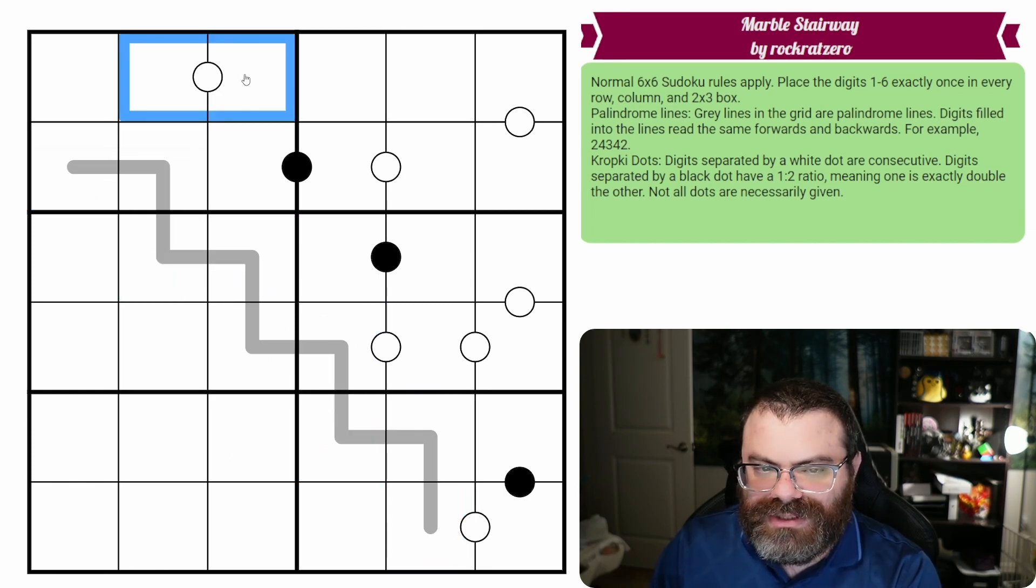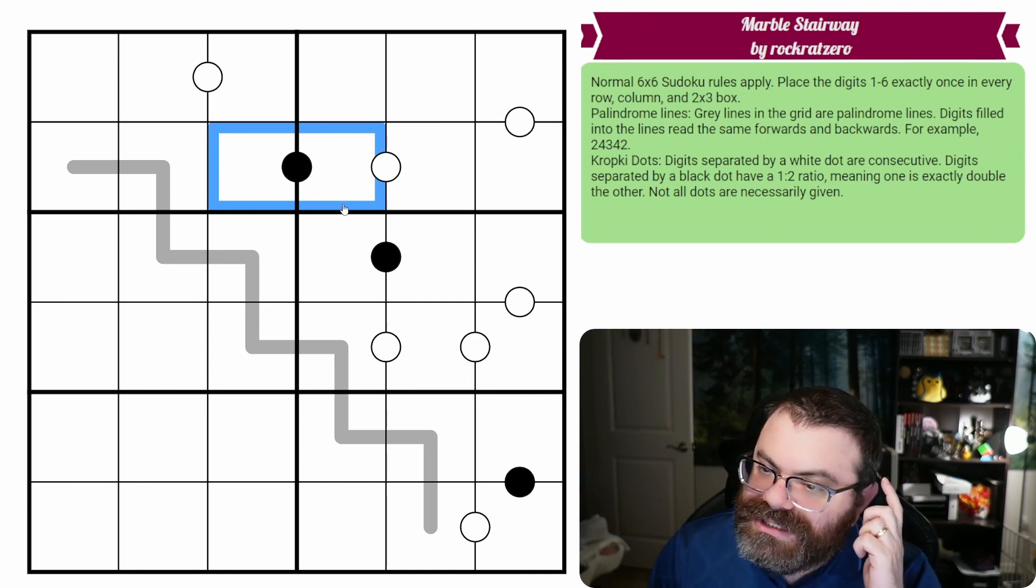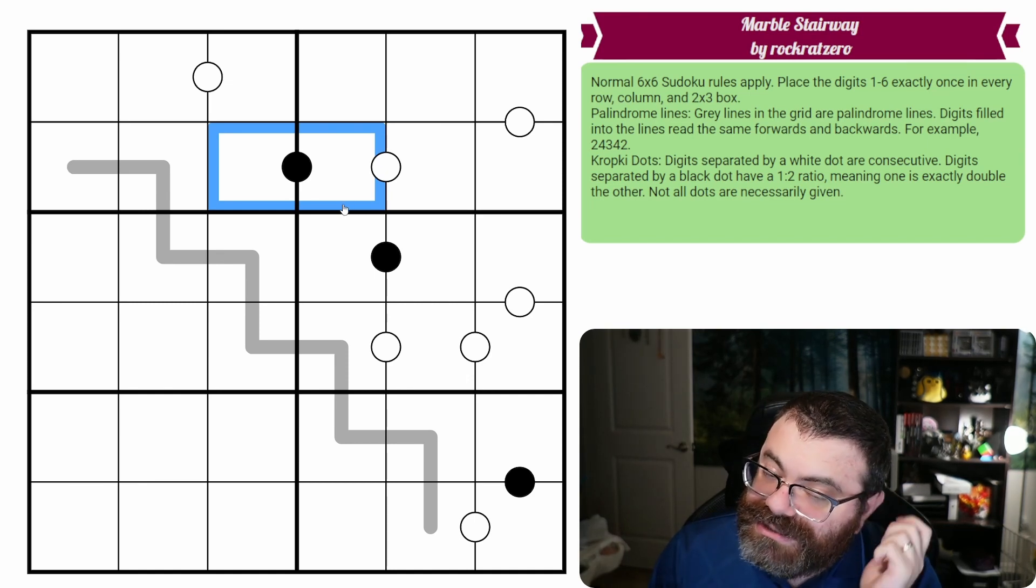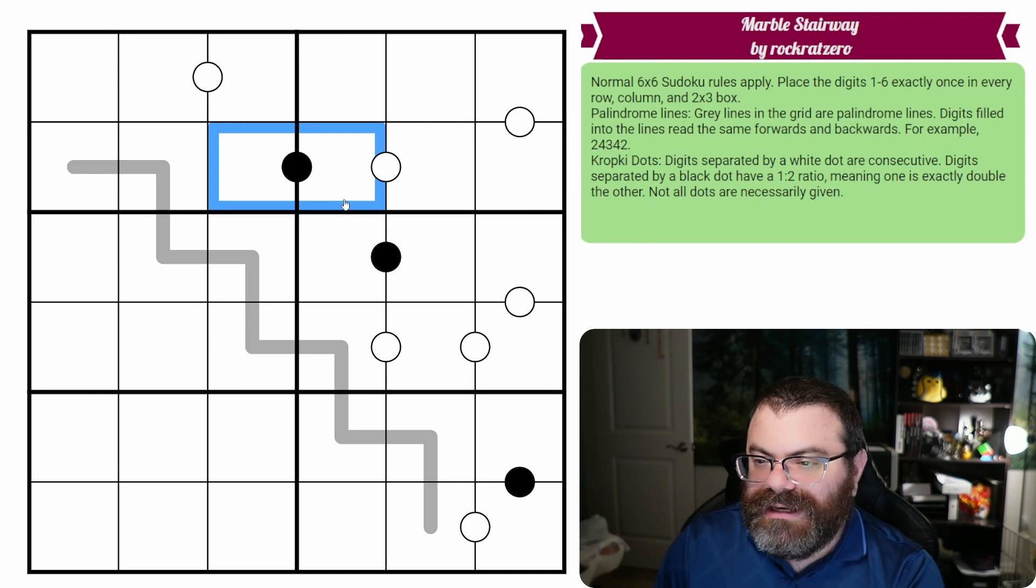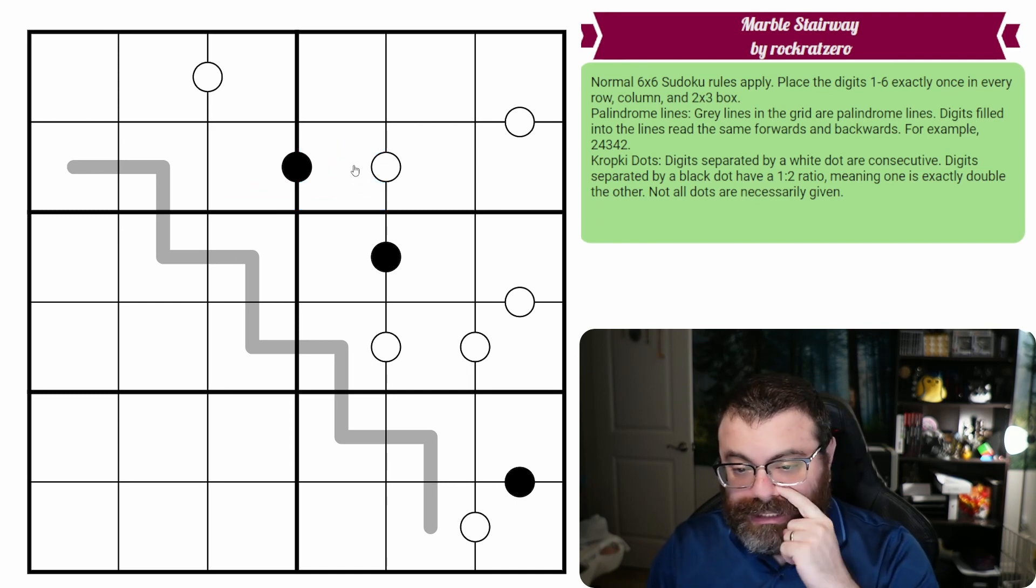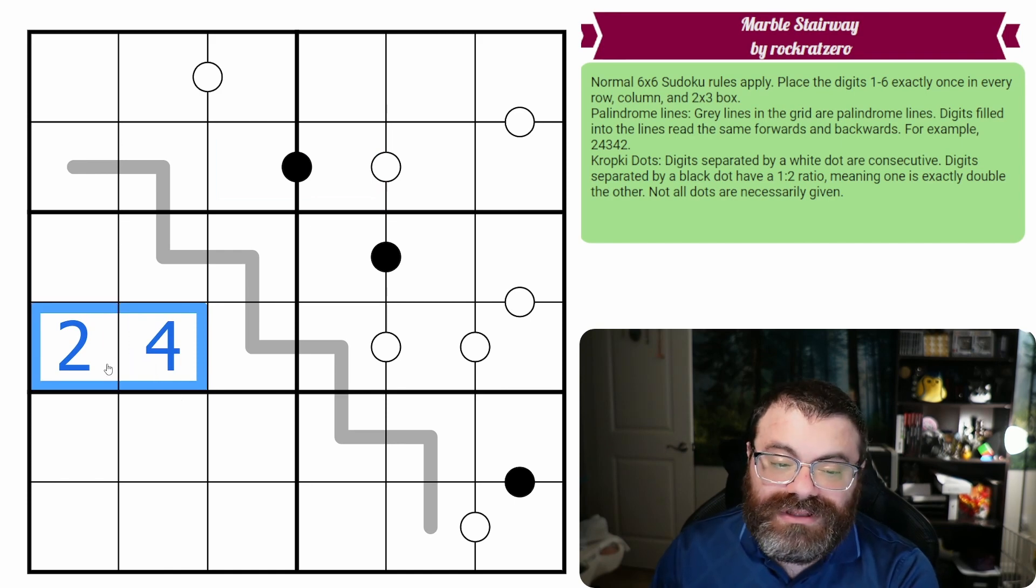Additionally, we have kropki dots in the grid. White dots separate consecutive digits, meaning they have a difference of 1. So if this is a 2, this could be 1 or 3. Black dots have a 1 to 2 ratio. An easy way to think about that is one is exactly double the other. If this was 2, this could be 1 because 2 is double 1, or it could be 4 because 4 is double 2. We don't have a negative constraint on the kropki dots.